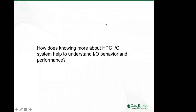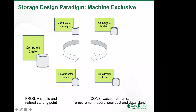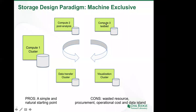Knowing more about the HPC IO system and its underlying structure helps you understand its behavior. Let me use the storage paradigm evolution at Oak Ridge to illustrate this point. Back in 2008 and before, Oak Ridge started with a single big simulation machine with a dedicated storage and file system. Over time, they added a dedicated data analysis machine with its own storage, and then another cluster for visualization — a simple and natural starting point for many systems.